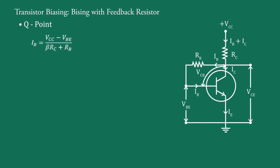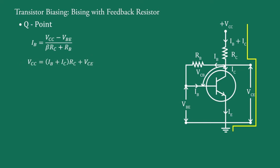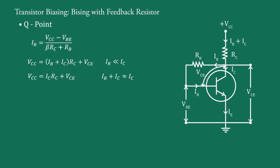Now consider the output section. Take the loop from +VCC through RC and VCE to ground. By applying Kirchhoff's law: VCC = (IB + IC) × RC + VCE. Since IB is very much less than IC, IB + IC ≈ IC. Therefore: VCC = IC × RC + VCE, or VCE = VCC − IC × RC.